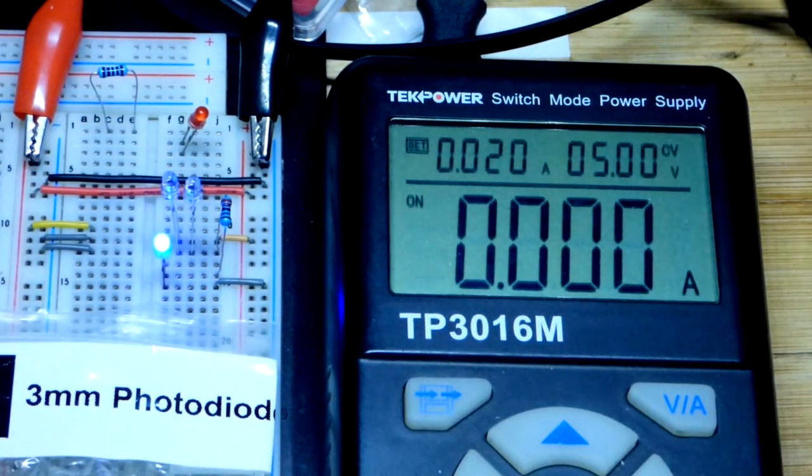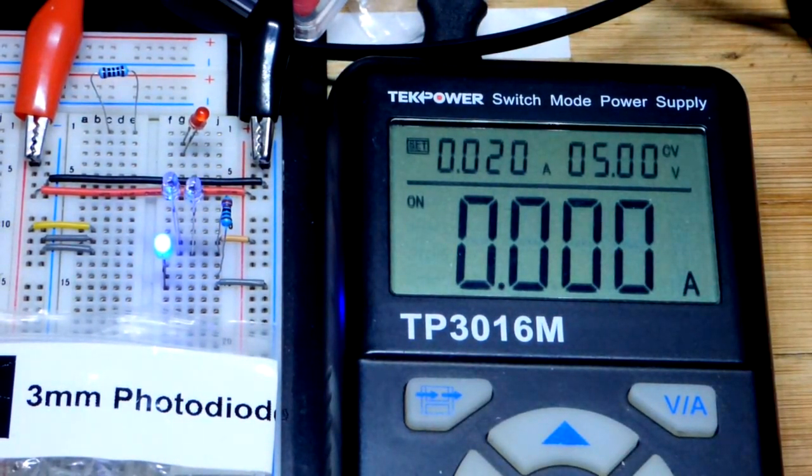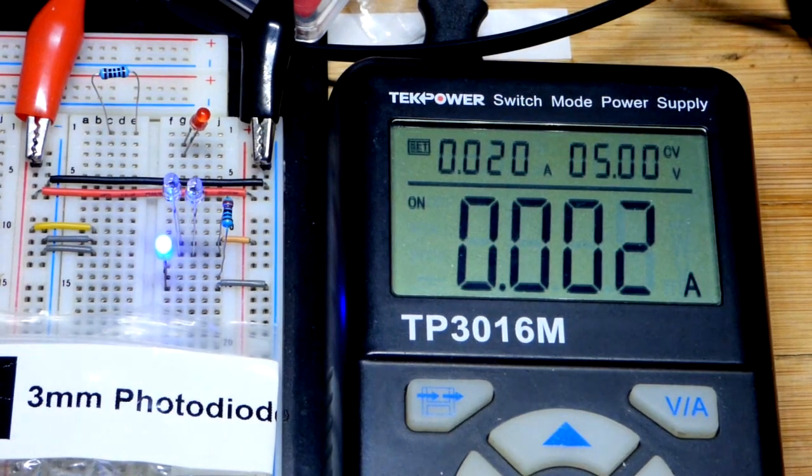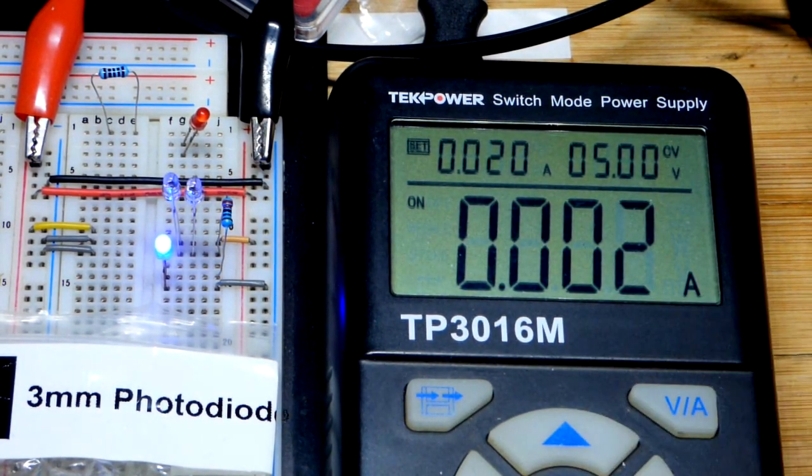If I increase the light level there you can see the LED got brighter, and if I increase it even more you can see it getting brighter and we need more current.